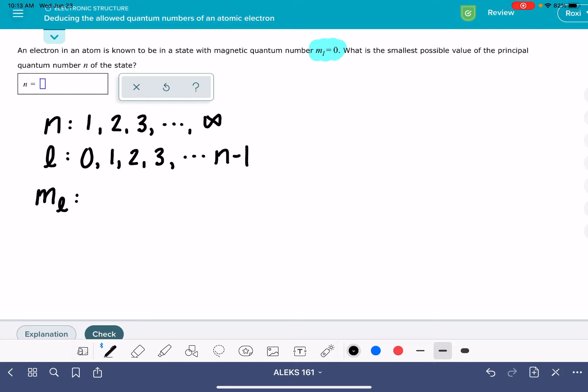And then for quantum number m_l, our values start at negative l, work their way up to zero, and then from there work their way up to positive l. Another way that we see this expressed is that quantum number m_l starts at zero, and then it could be either plus or minus one, plus or minus two, et cetera, with a maximum and minimum plus or minus l. So both of these represent the same thing, it's just two different ways of writing it.